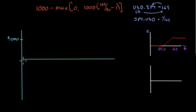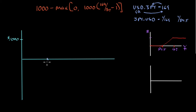Written as dollars per yen, 169 becomes 1/169, and 84.5 becomes 1/84.5, which is the larger number. So on the payoff chart, 1/169 is to the left and 1/84.5 is to the right. As we move right, the yen is getting stronger — one yen buys more dollars.